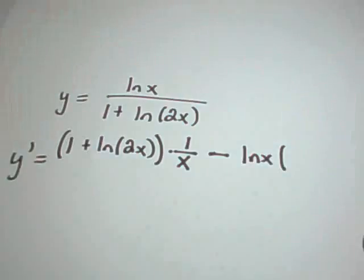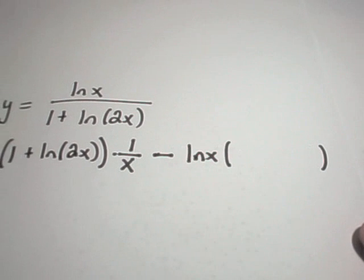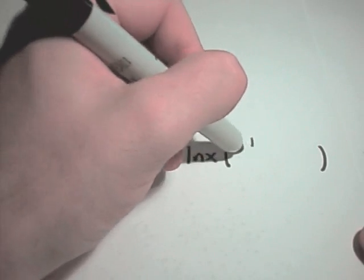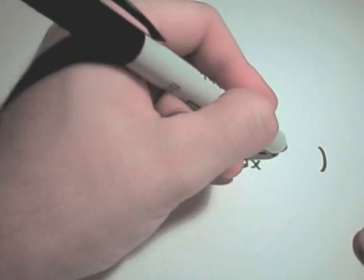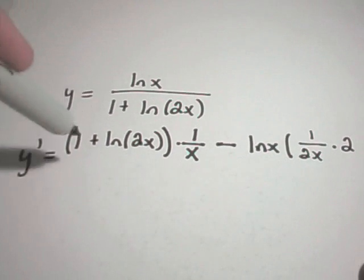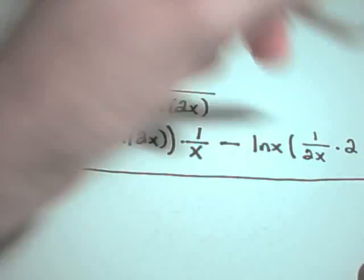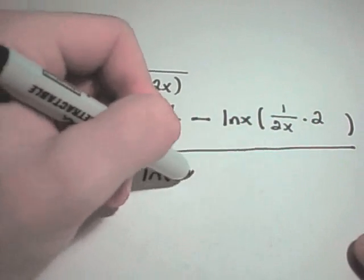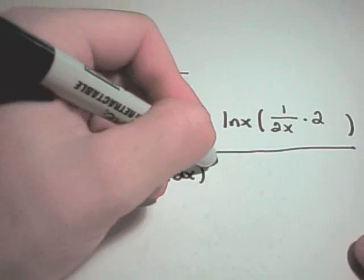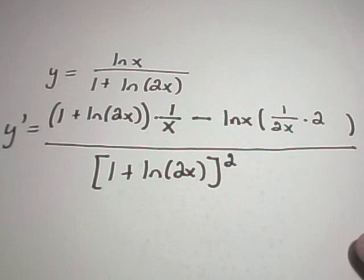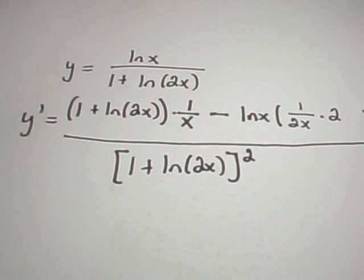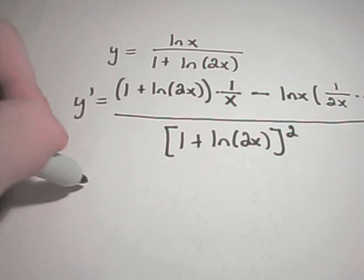It says you leave the top part alone. Then we multiply that by the derivative of the bottom part, the derivative of 1 being 0. If I use the chain rule on ln of 2x, I'll get 1 over 2x times 2. Then it says that is all over the denominator, 1 plus ln of 2x quantity squared. At this point, you could clean this up. I guess I'm kind of lazy. I don't really want to clean it up. But let me go ahead and do it here.